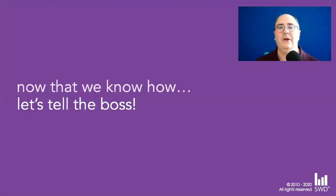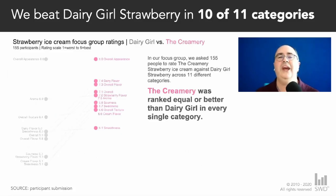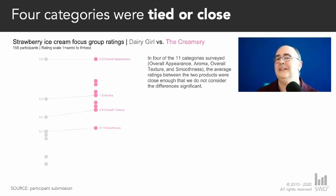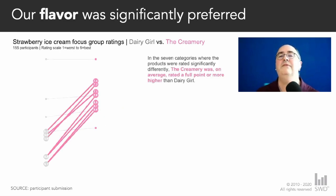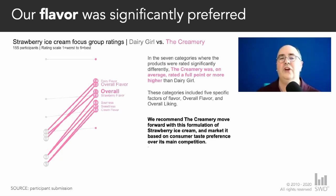So now let's tell the boss. If presenting live, say: 'Hey boss, do you know how many times Dairy Girl beat Creamery in this taste test?' The answer is zero — Dairy Girl was never rated higher on any category. We were higher in 10 of 11 and tied on the 11th. Some differences weren't statistically significant, but we tied or beat them there too. It was on overall and flavor where there was a significant difference — overall liking, overall flavor — we were way ahead. Our formulation of strawberry is preferred by our focus group, and we should definitely market this one because there's a strong taste preference over our main competition.